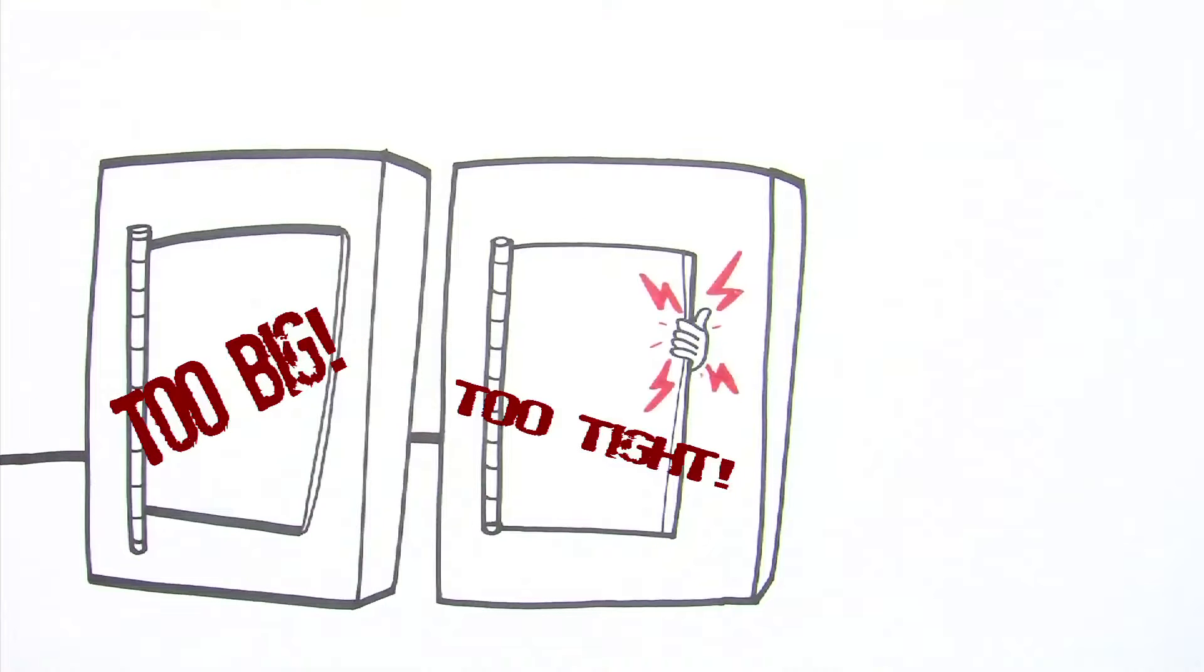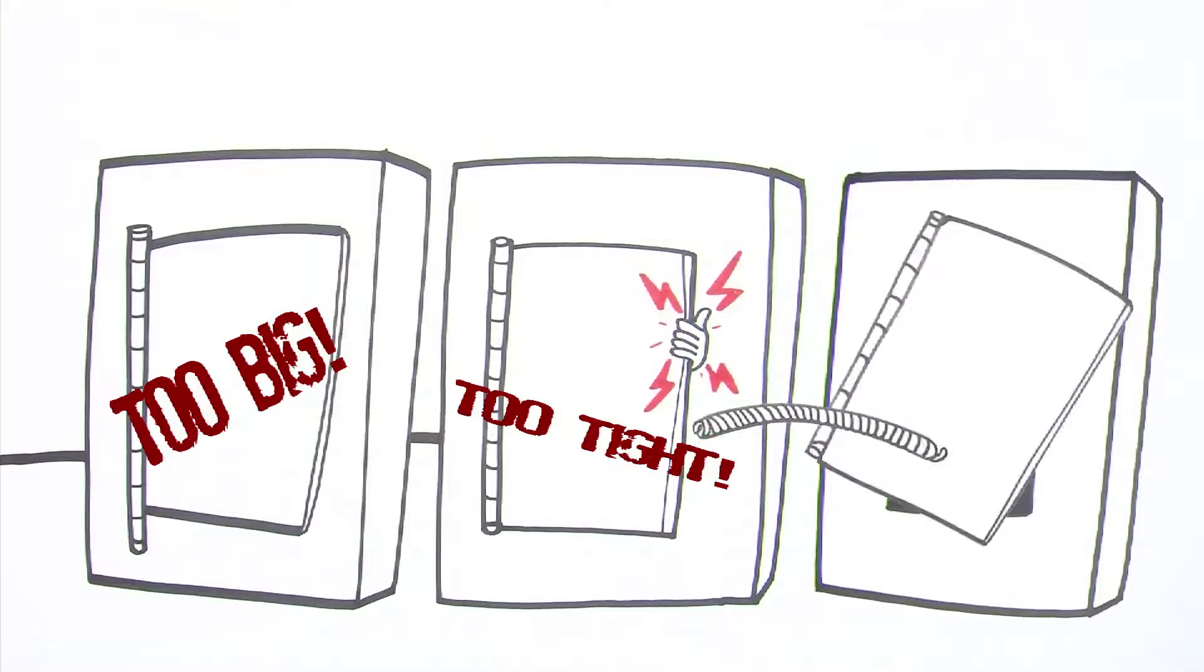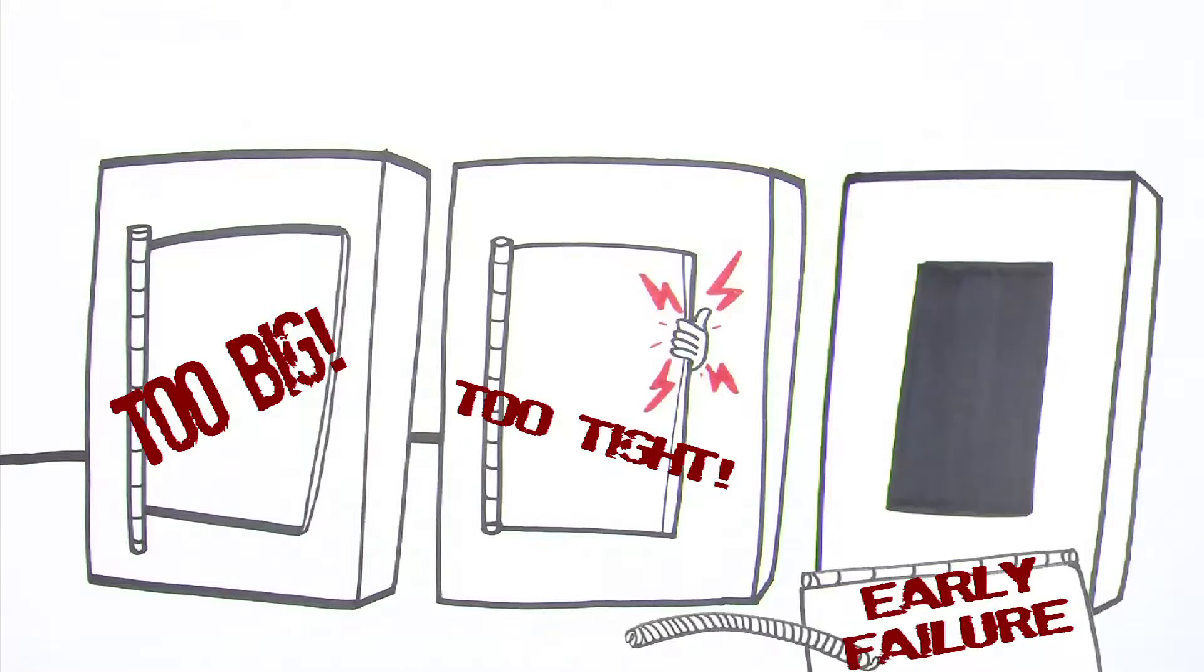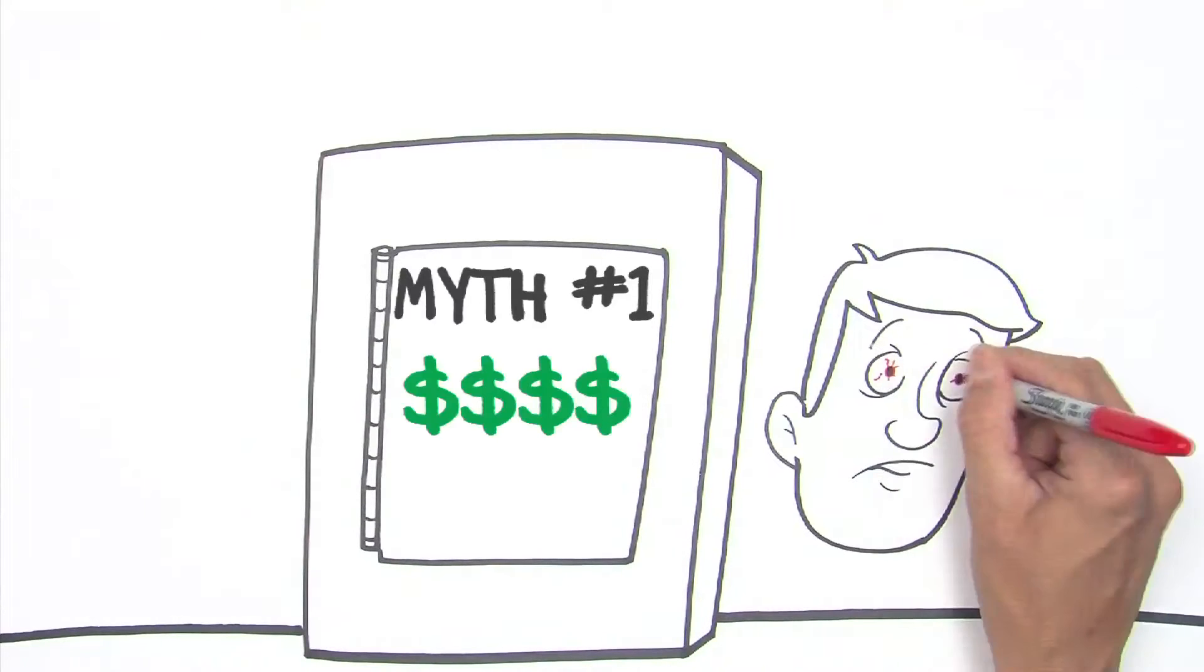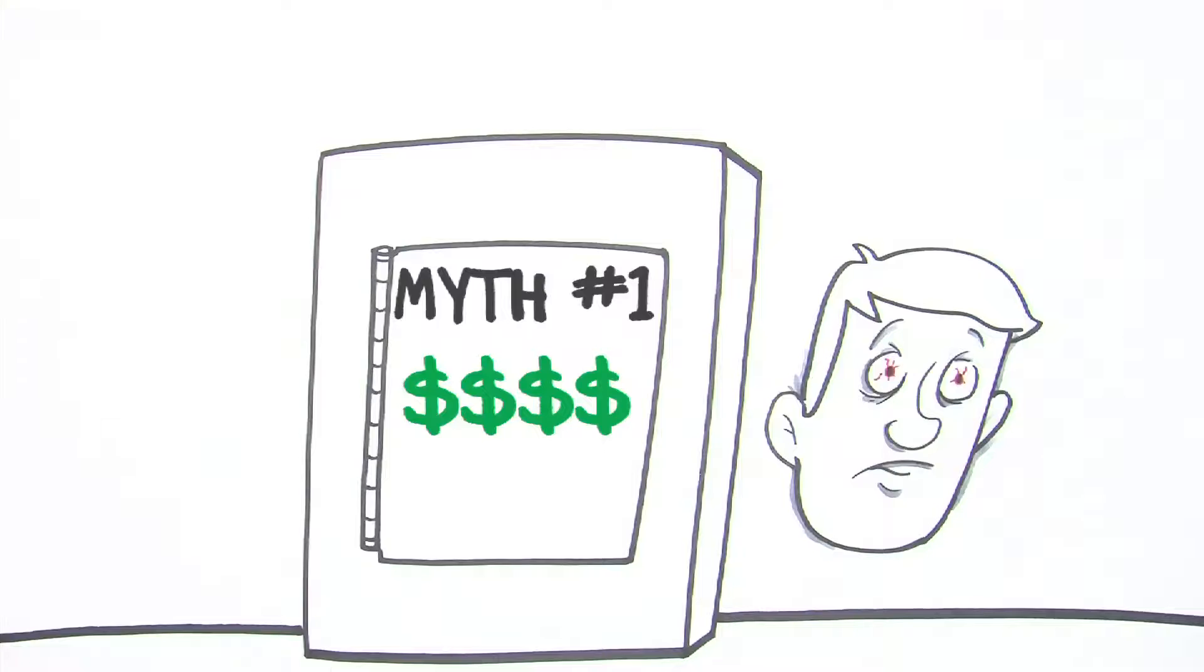Door number three, hinge failed prior to testing. Myth number one: custom is always expensive, slow, and mind-numbing.